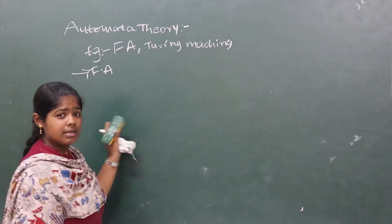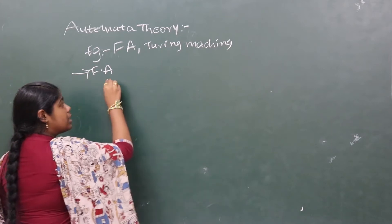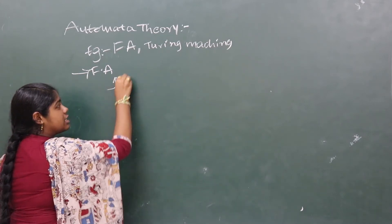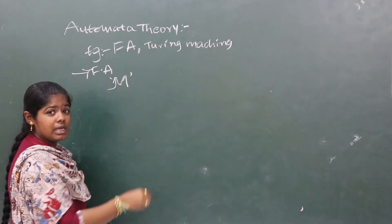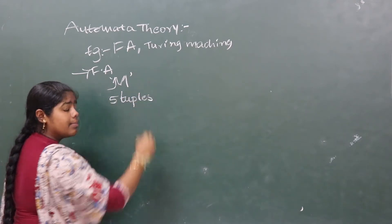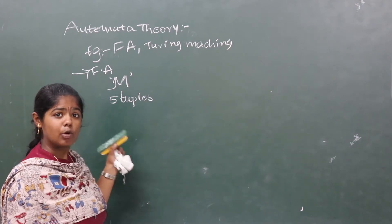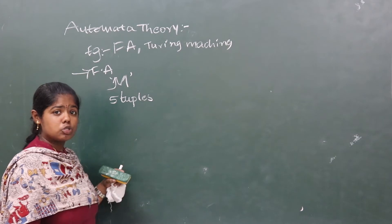Finite automata, it is nothing but an automata machine. Some automata machine can denote by a letter M, a machine. We have five tuples. Tuples means attributes. That means a computational device is solved. That means five attributes use to solve.